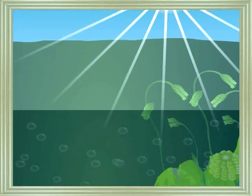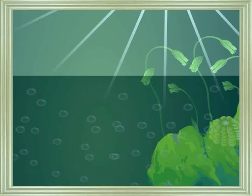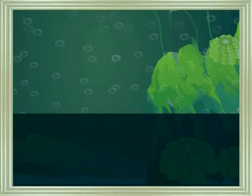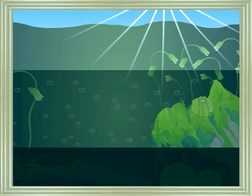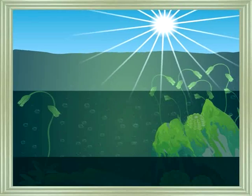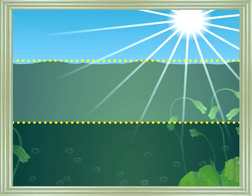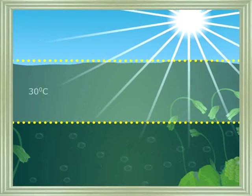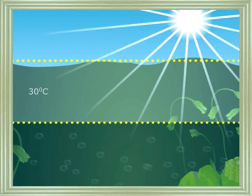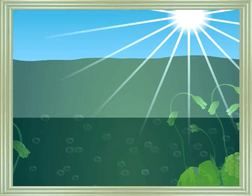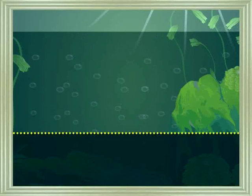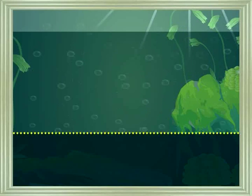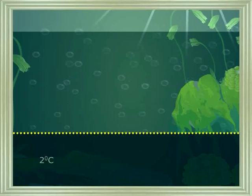Temperature decreases with increase in depth. In tropical regions, the surface temperature could be as high as 30 degrees centigrade, but in the abyssal zone it is as low as 2 degrees centigrade.